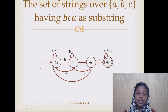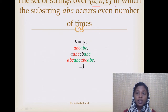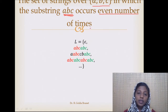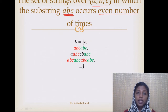This next problem is an extension of the previous one. We have the set of all strings over alphabets A, B, C in which we track the substring ABC, but it must also occur an even number of times. The null string is a member of this language because the number of occurrences of ABC is 0, and 0 is an even number.